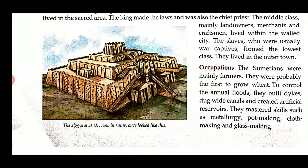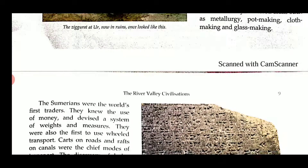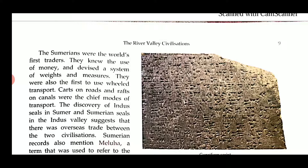What was the occupation of these persons? The Sumerians were mainly farmers. They were probably the first to grow wheat and control the annual floods. They built dikes, ducts, viaducts, canals and created artificial reservoirs. They mastered skills such as metallurgy, pot making, cloth making and glass making. The picture of the ziggurat temple is given in our book. The Sumerians were also the first traders — they knew how to use money. They devised a system of weights and measures, and were also the first to use wheel transport. Carts and roads, and rafts on the canals, were the chief modes of transport.